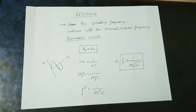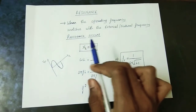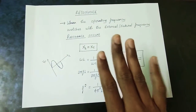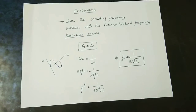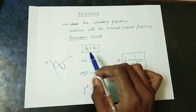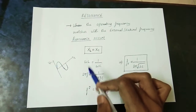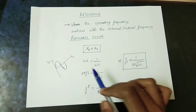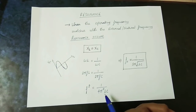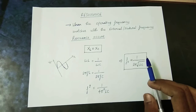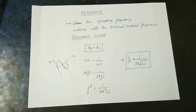What is the resonance condition of an RLC circuit? XL is equal to XC — Capacitive Reactance is equal to Inductive Reactance. The two reactances being equal and opposite means they cancel each other. This is the Resonance Condition: XL minus XC equals 0. Substituting XL = ωL and XC = 1/ωC, and substituting 2πF, the resonance frequency equals 1 divided by 2π times the square root of LC.